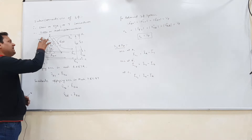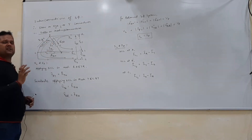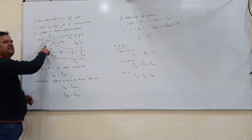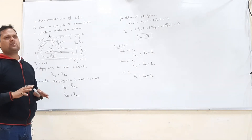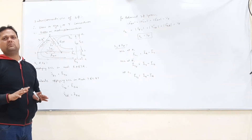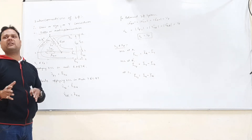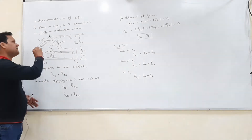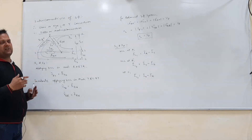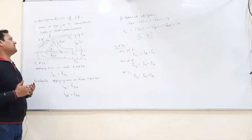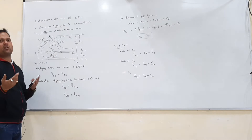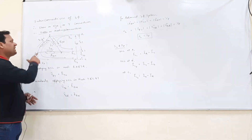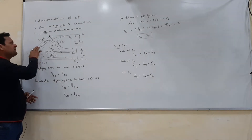There may be a phase angle difference between ERN and IR depending on the load. Since 99% of loads are inductive in nature, we consider the current lagging behind the voltage by some angle phi. Therefore, we consider that the phase angle difference between voltage and current is phi.